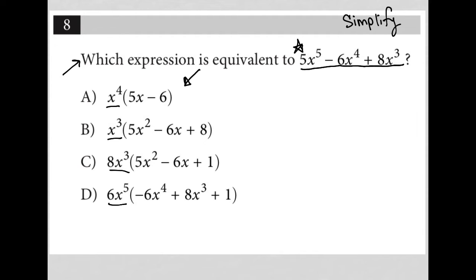What is the greatest common factor between 5x to the fifth, 6x to the fourth, and 8x to the third? Well, numbers-wise, there isn't any number that goes into 5, 6, and 8 evenly. So we're going to focus our attention on the variables.